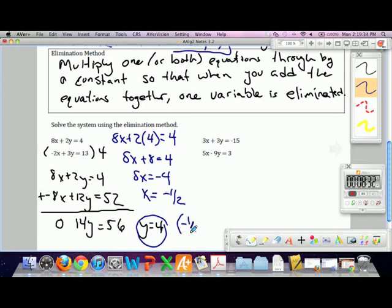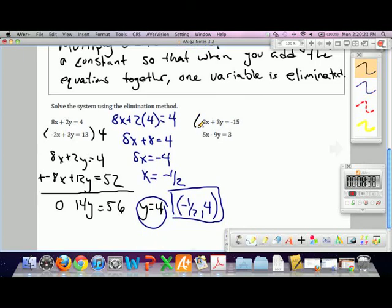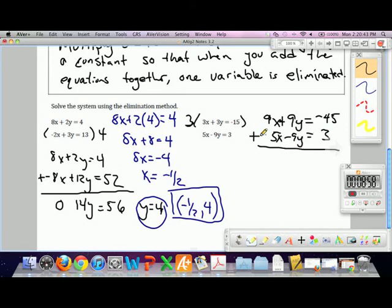Multiply by 3. That gives us 9X plus 9Y equals negative 45. Keep the same equation: 5X minus 9Y equals 3. Add them together. 9 plus 5 is 14Xs. Zero. And negative 42. So if 14X is equal to negative 42, what's X? Therefore, X is negative 3. And if you know what X is, plug it back in.